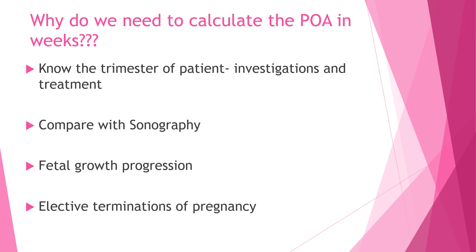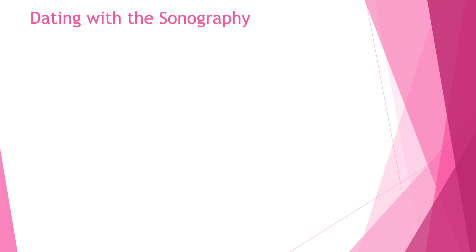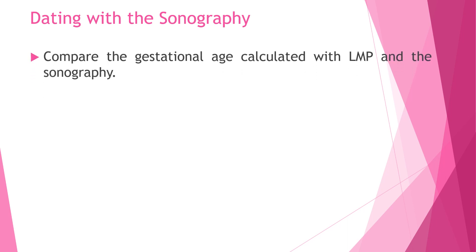In fetal growth restriction it is very important to know when the discrepancy started and how much discrepancy there is. We also need to know the exact gestational age before an elective termination of pregnancy — for example, terminations at 37 or 34 weeks require confirmation that the patient is actually at that gestation.